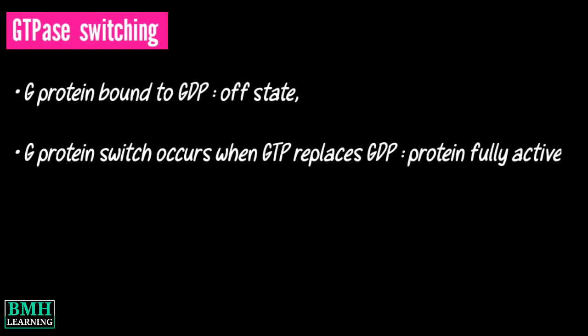G proteins. When a G protein is bound to a single GDP molecule, it is in an off state or inactive. The G protein switch occurs when a GTP molecule replaces the GDP, rendering the protein fully active. This activity allows the G protein to transmit a signal by binding to proteins that ultimately cause a functional response in the cell. That was all — thanks for watching.